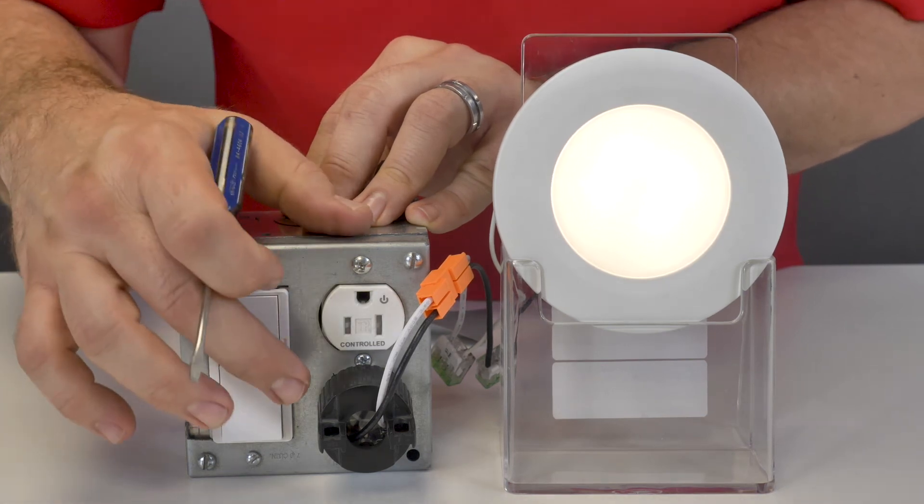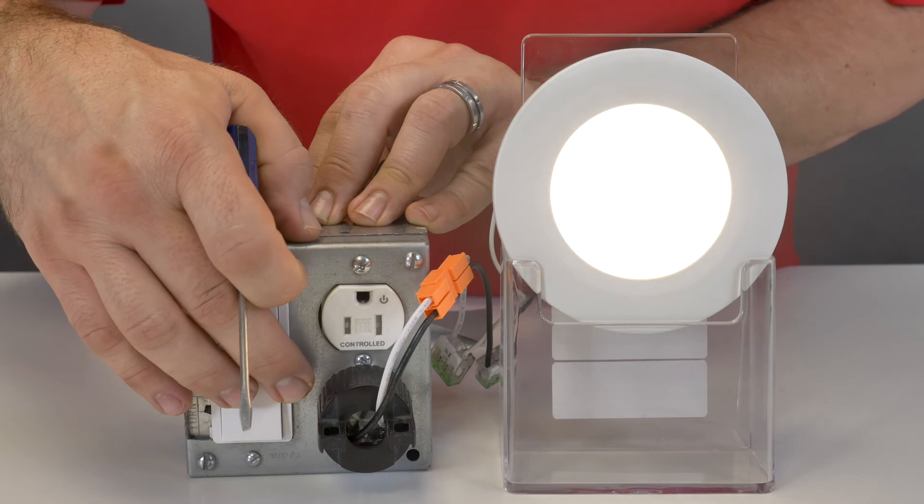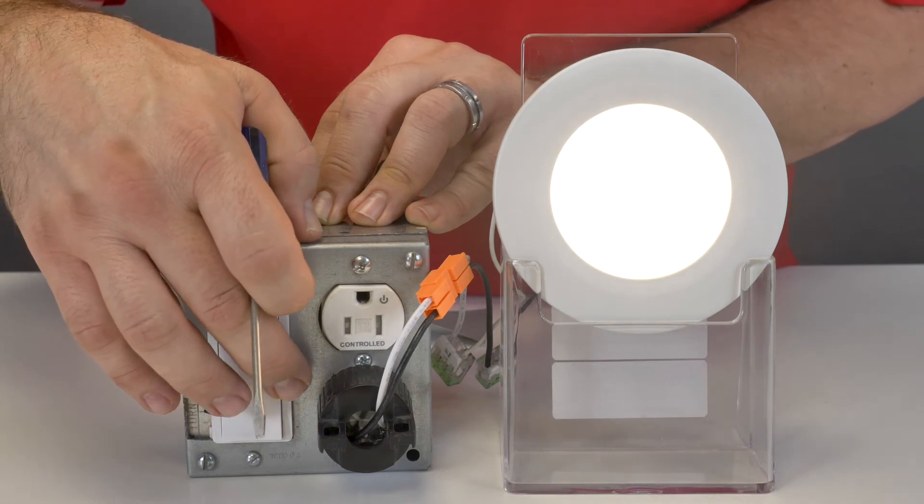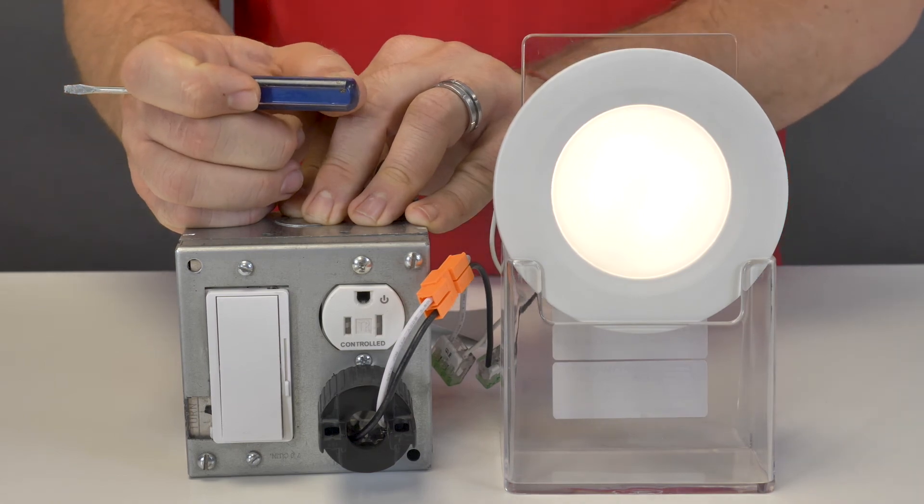At that particular point, I have set the level and now I can dim up and down to make the light more bright or less. Turn it on and turn it back off at the same light levels.